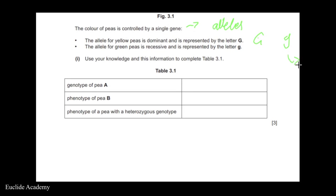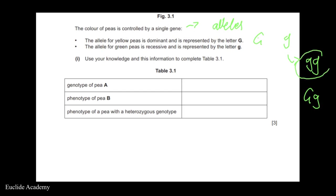The recessive allele will only express itself in the phenotype when the organism is homozygous, meaning you have lowercase g and lowercase g. If a dominant uppercase G is introduced, it will not express itself. This is known as a homozygous recessive situation, whereas having one uppercase G and one lowercase g is heterozygous.